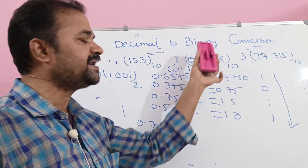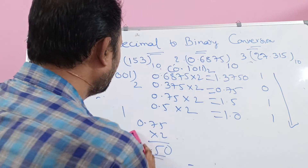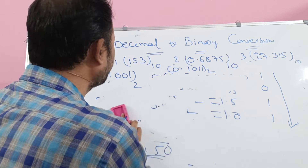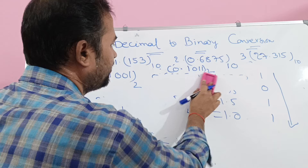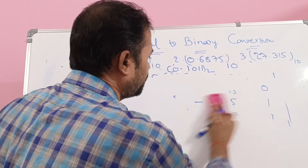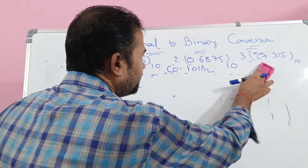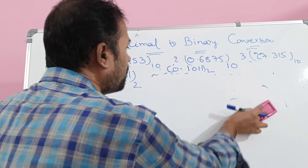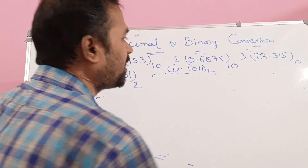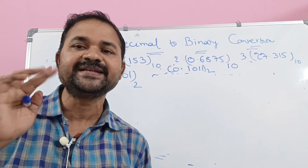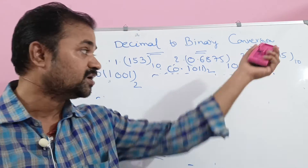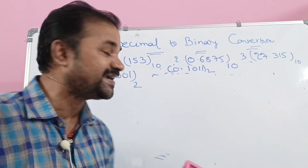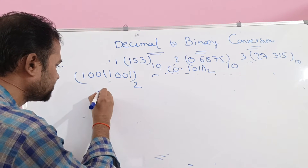Now let us solve the third problem. The first example contained only an integer part, the second contained only a fractional part, whereas the third example is a combination of both integer part and fractional part. Integer part requires division by 2, and fractional part requires multiplication by 2. The integer part here is 27.